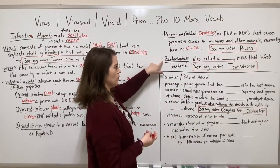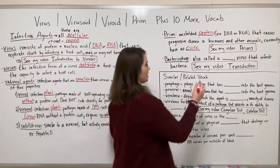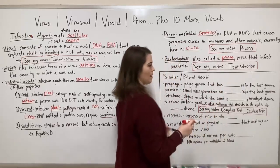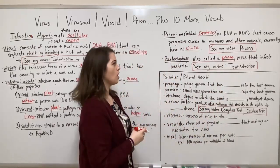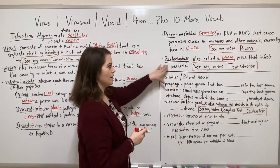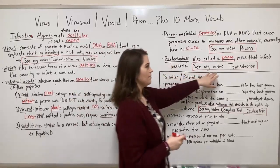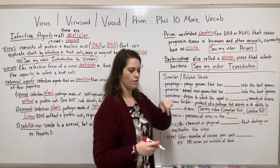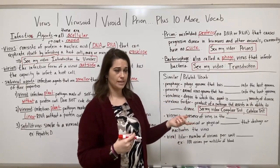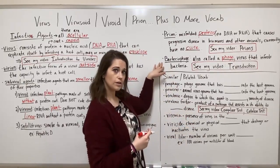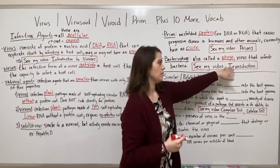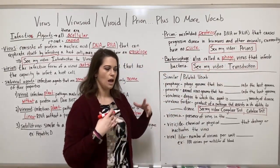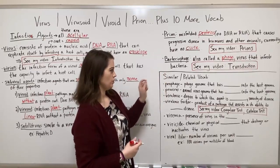The final infectious agent we're covering is the bacteriophage, also called a phage. This is simply a virus that infects bacteria. I have a video on transduction, a form of horizontal gene transfer in bacteria that uses bacteriophages, where I go into more detail about what they look like and how they replicate.